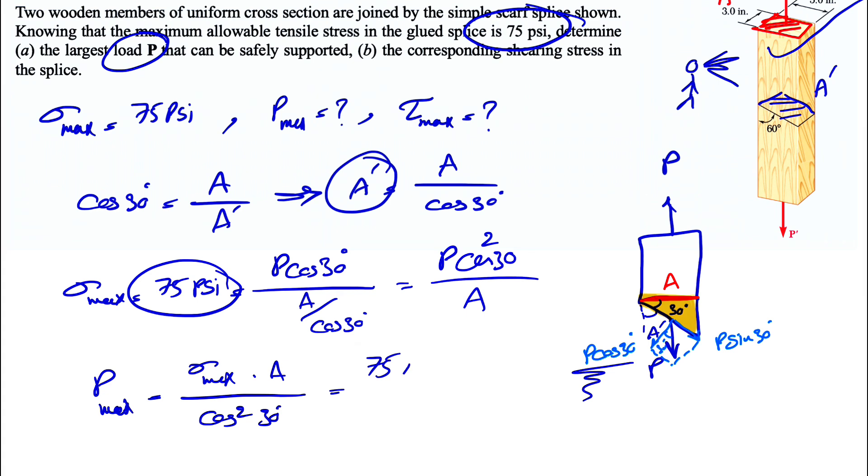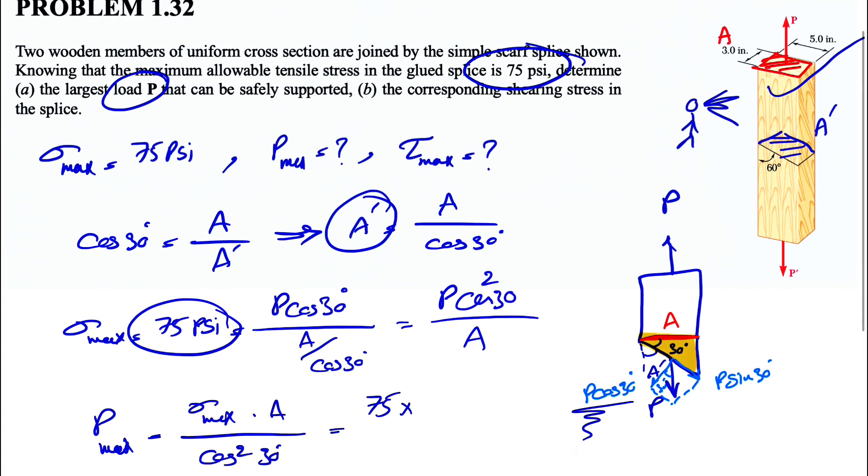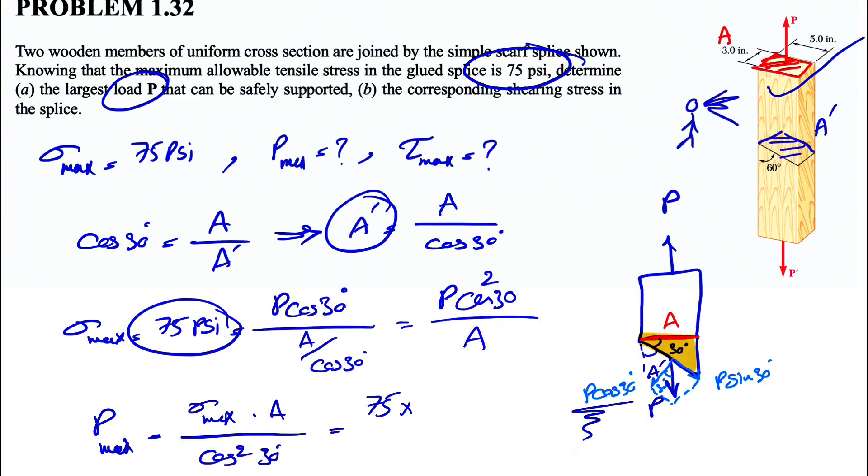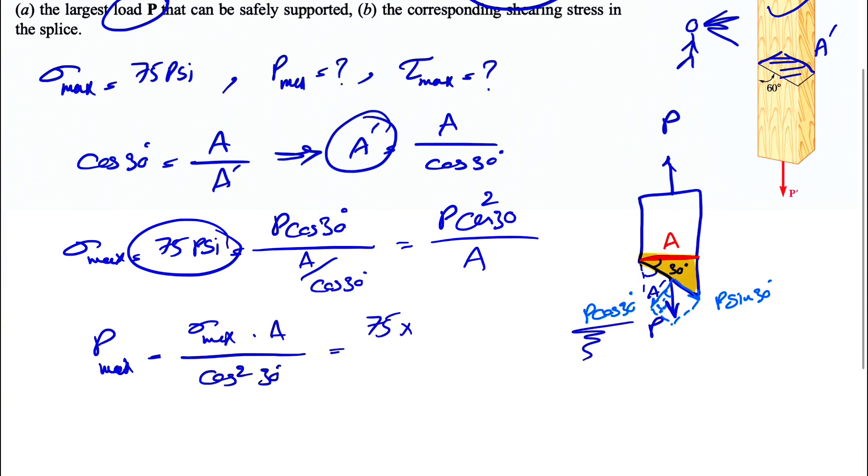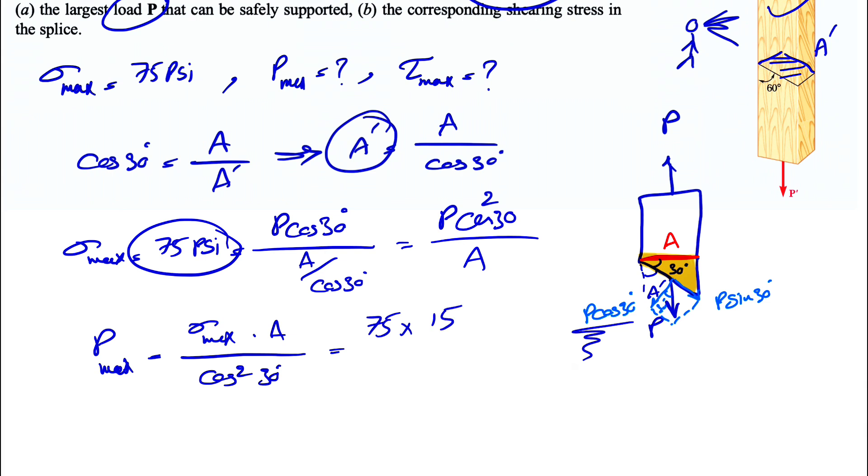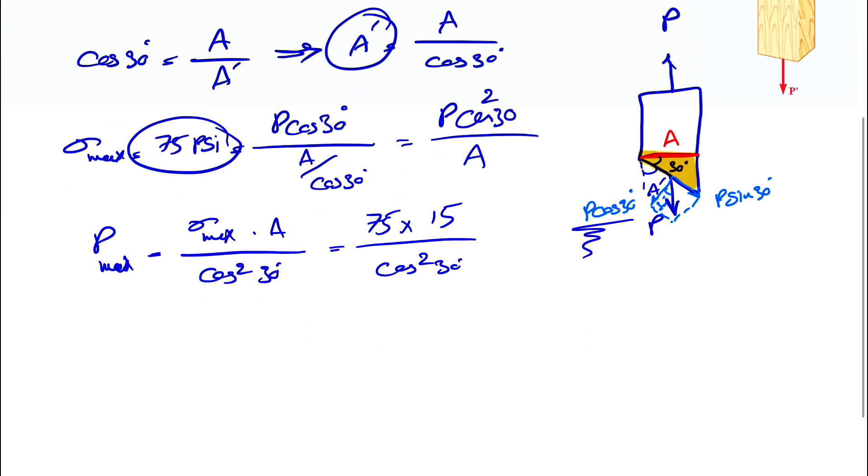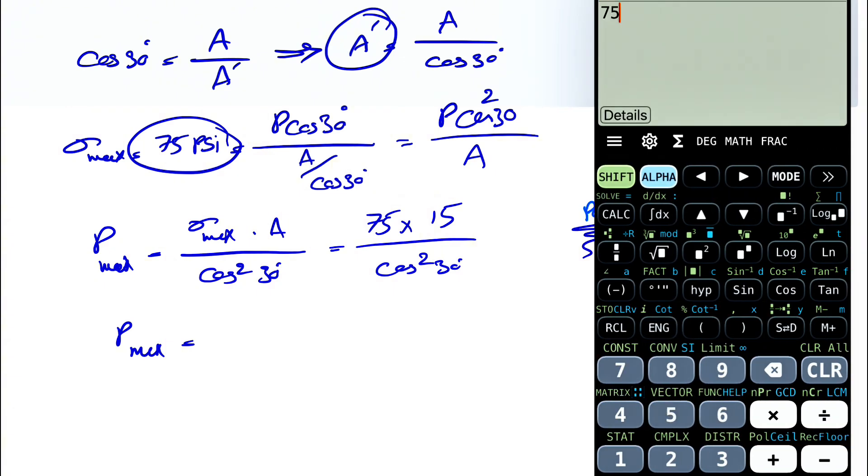So we have 75 for the maximum of the tensile stress. The area is pretty easy. We have this red rectangle here. One side is 3, the other side is 5. So 3 times 5 is going to give us 15 inches squared. And we have cosine squared of 30 degrees. That's going to give us the maximum value or the largest P that we can have. Let's calculate this quick. 75 times 15 divided by cosine of 30 squared, it's going to give us 1,500 pounds since we have PSI, or 1.5 if we want to report it as kips.